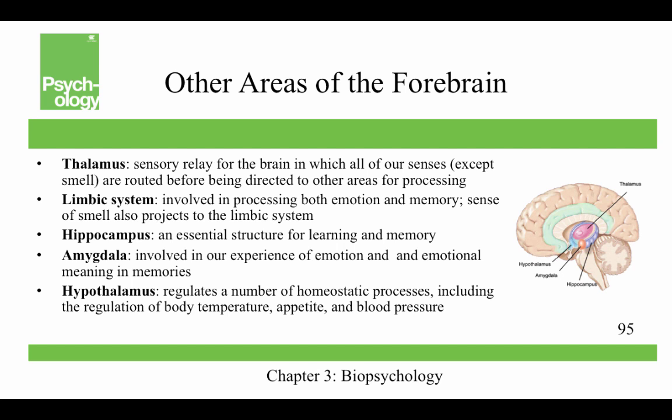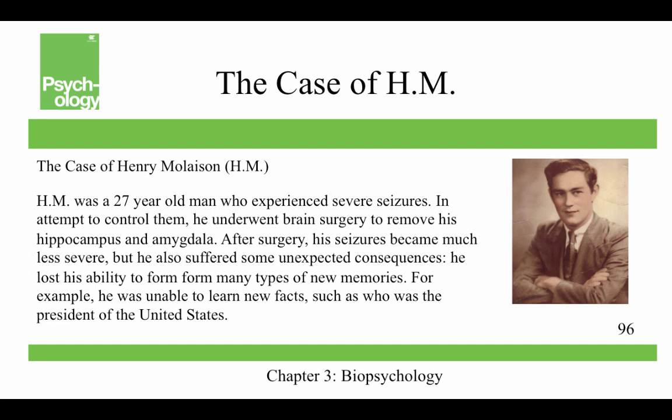Other areas of the forebrain: the thalamus is a sensory relay for the brain through which all senses except smell are routed before further processing. The limbic system is involved in processing emotion and memory, and the sense of smell also projects to it — one reason smells can evoke emotional responses that other sensory modalities cannot. The hippocampus is essential for learning and memory. The amygdala is involved in our experience of emotion and emotional meaning in memories. The hypothalamus regulates homeostatic processes including body temperature, appetite, and blood pressure.